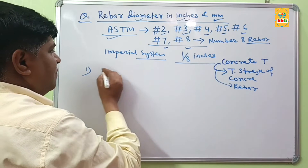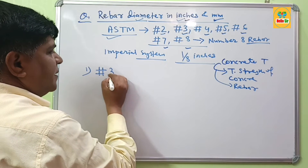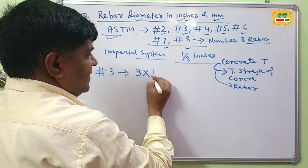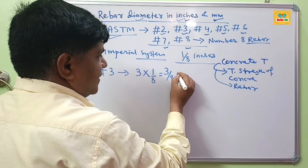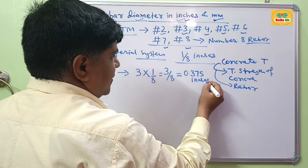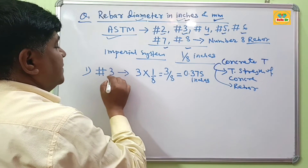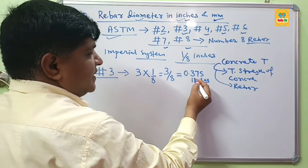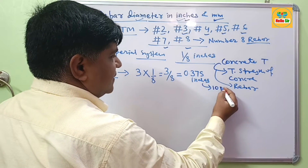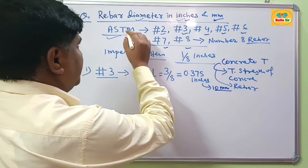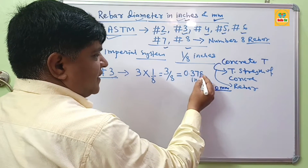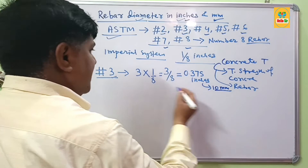For example, suppose you have a number 3 rebar. You multiply 3 by 1/8 inches, which gives you 3/8. If you solve this, it becomes 0.375 inches. The diameter of number 3 rebar is 0.375 inches, which is approximately equal to 10 mm.